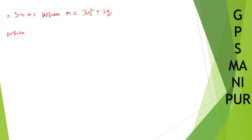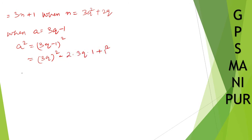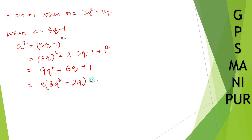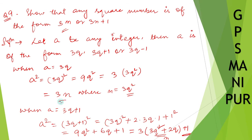When a is equal to 3q minus 1, a squared equals (3q−1)² which expands as 9q² minus 6q plus 1. Taking 3 common from the first two terms gives 3(3q² − 2q) plus 1, which is of the form 3n plus 1 where n is equal to 3q² minus 2q.